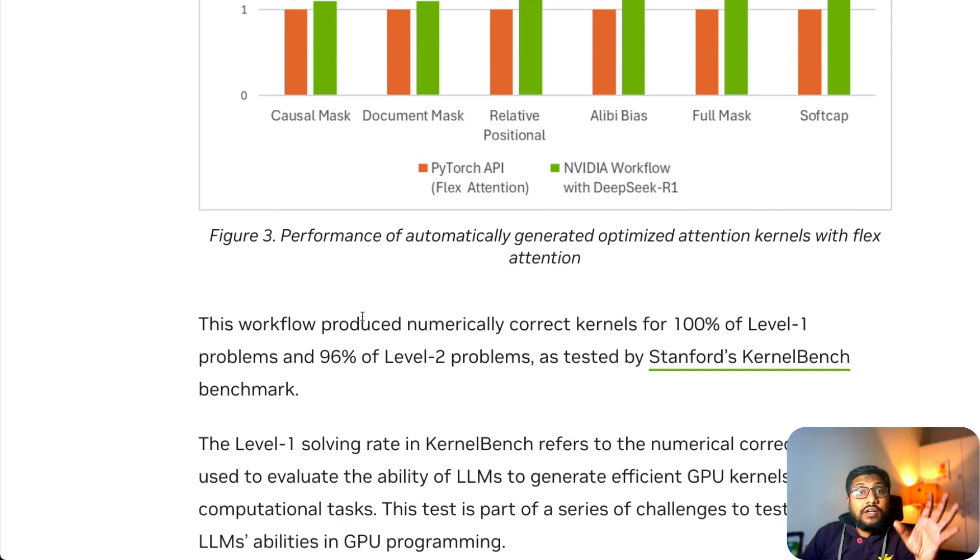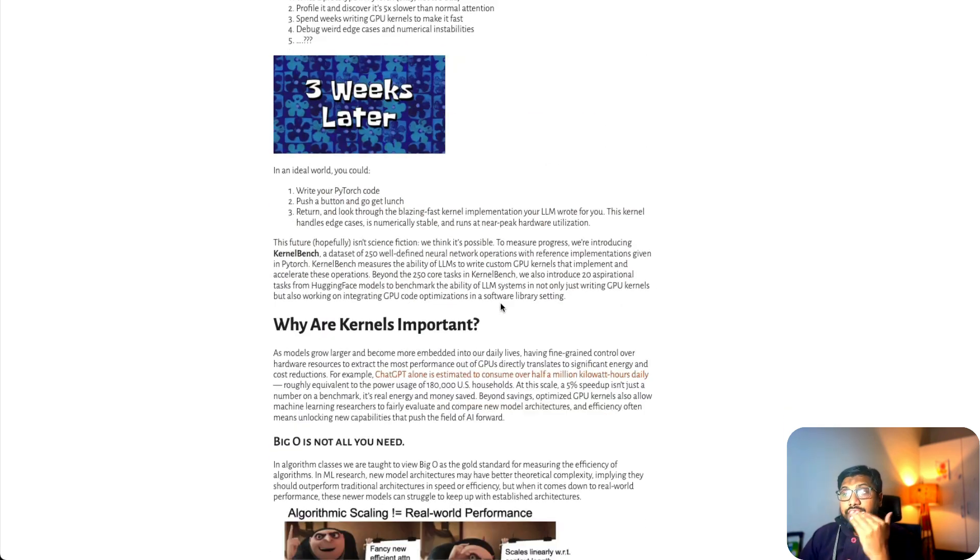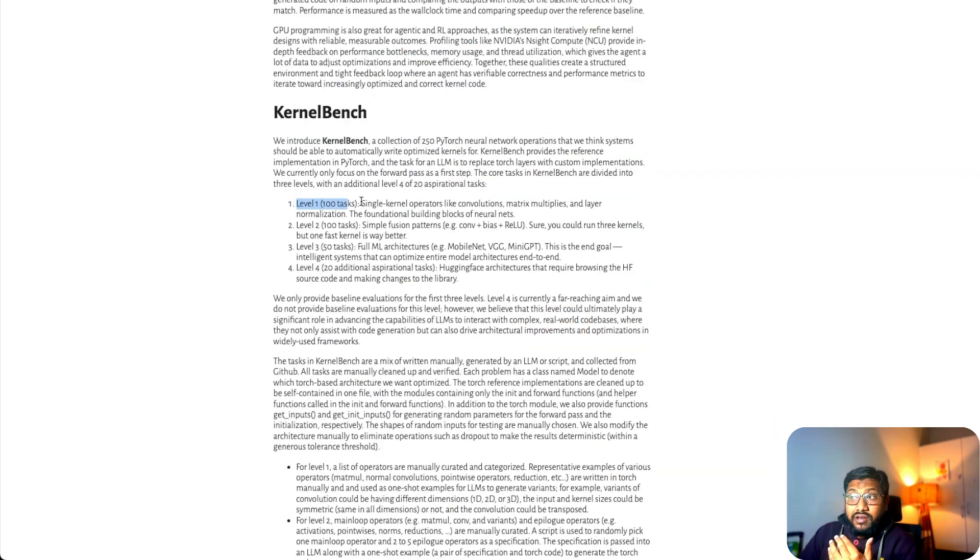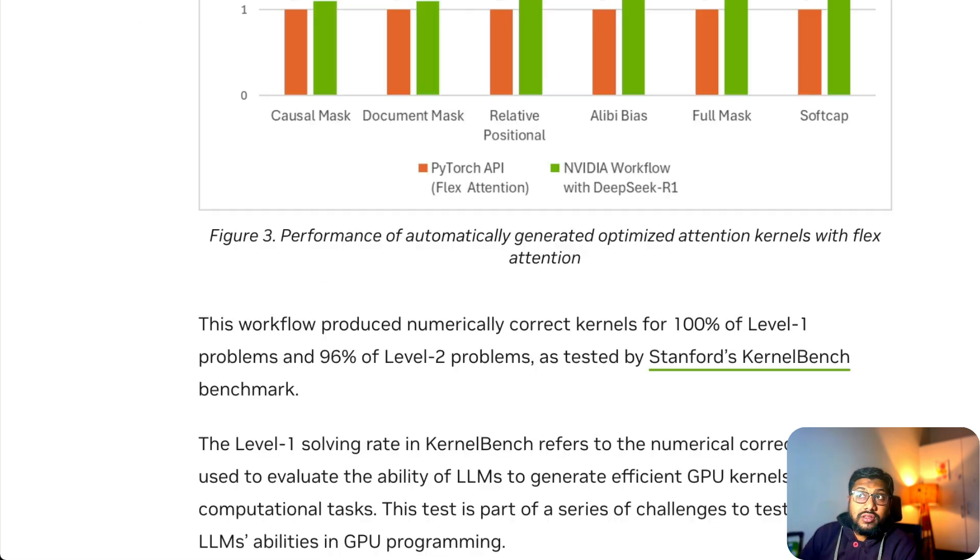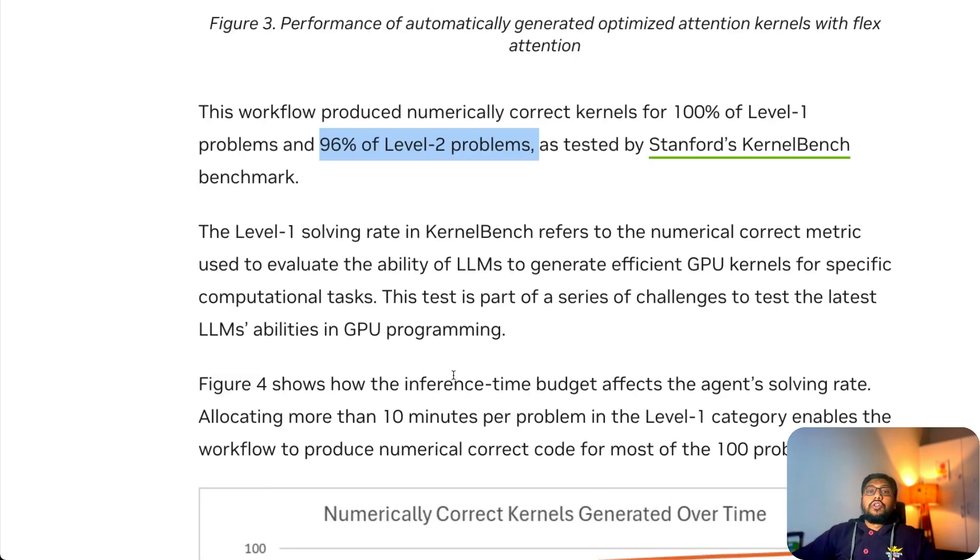Another very interesting aspect here is that there is a benchmark called KernelBench. This is to understand how efficiently large language models can create these kinds of GPU kernels. There are different levels of tests: level one which has 100 tasks, level two which has 100 tasks. What the workflow that NVIDIA created managed to do is it produced 100% correct code for level one problems and 96% correct code for level two problems, which is quite insane. These are niche, highly efficient, computationally efficient programming tasks, and this particular workflow, the test time scaling of DeepSeek R1 with the verifier, managed to do this successfully.